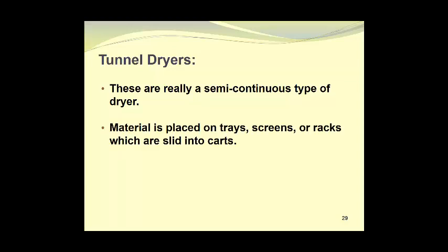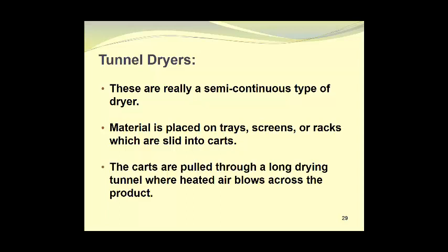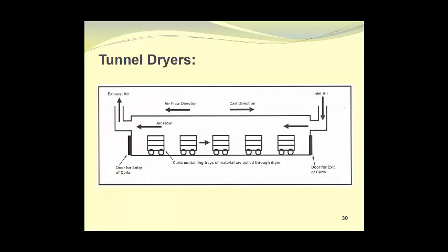Material is placed on trays, screens, or wire racks which are slid into carts. The carts are pulled through a long drying tunnel where heated air blows across the product. Here we see a diagram of a tunnel dryer. The carts enter the dryer through a door on the left. The carts containing trays of material being dried are pulled through the dryer, and once they reach the far end of the dryer on the right, they exit through the door that's there. You will also notice that the direction of air flow is opposite, or counter, to the direction the carts are traveling. So this is called counter-current air flow.